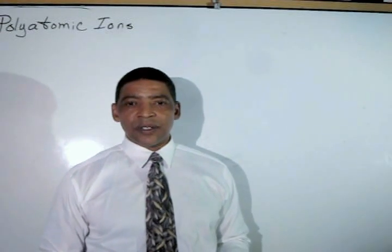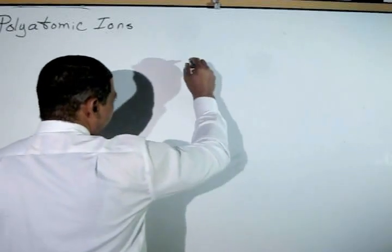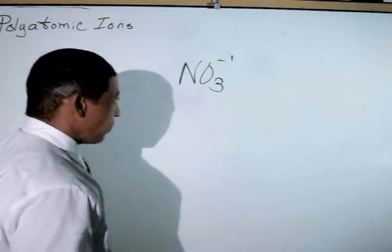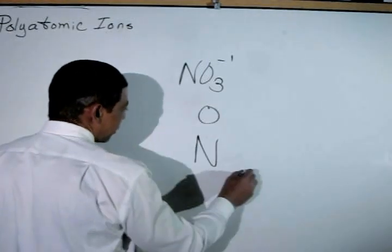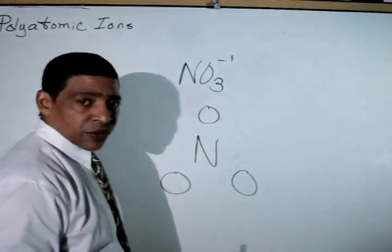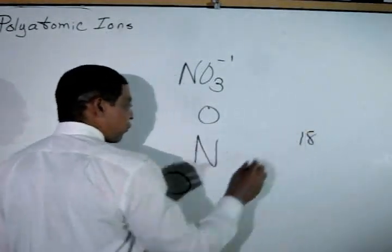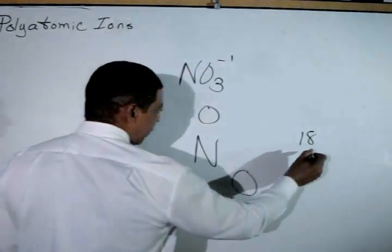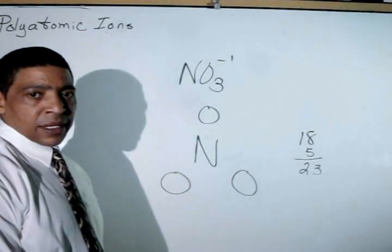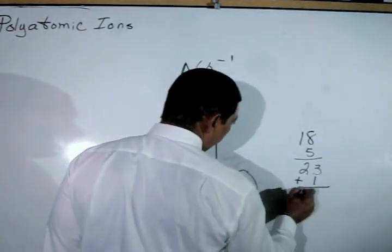Now let's write the Lewis structure for the polyatomic ion known as nitrate. The chemical formula for nitrate is NO3 with a negative one charge. Simply write a nitrogen surrounded by three oxygens. Each oxygen contributes six valence electrons, so eighteen electrons are available from the oxygen atoms. Nitrogen possesses five, giving a total of twenty-three electrons. The oxidation state of nitrate is a minus one, so we add one electron for a total of twenty-four.